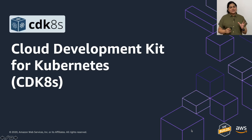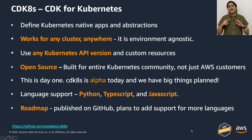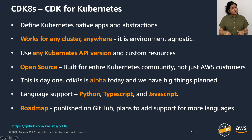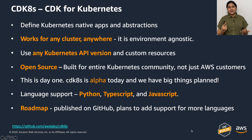Let's quickly talk about CDK for Kubernetes, or CDK8s. Unlike CDK, CDK8s is meant for any Kubernetes deployment anywhere — not just AWS — making it very environment agnostic. You can use any Kubernetes APIs or custom resources with it, and it's open source so anyone can contribute on GitHub. It's still in alpha stage, having just been announced this year, but you can play around with it and check out the roadmap.